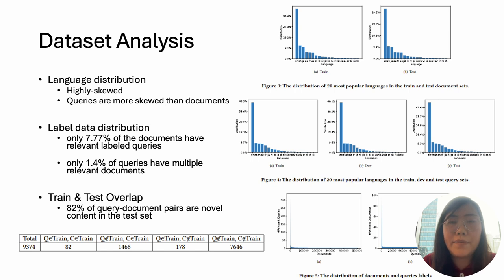Moreover, MSMACO Web Search is capable of offering effective assessments of models based on memory capacity and generalizability, by dividing the test set into four categories for a more detailed comparison.